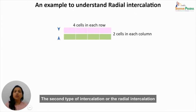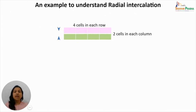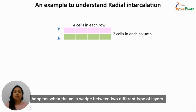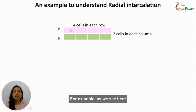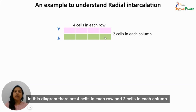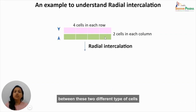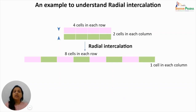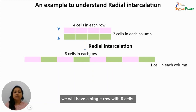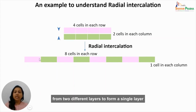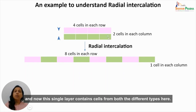Radial intercalation happens when cells wedge between two different types of layers. For example, if there are four cells in each row and two cells in each column, when radial intercalation occurs between these two different cell types, we get a single row with eight cells. The two different layers merge to form a single layer containing cells from both different types.